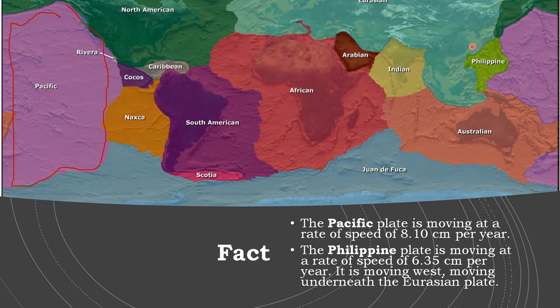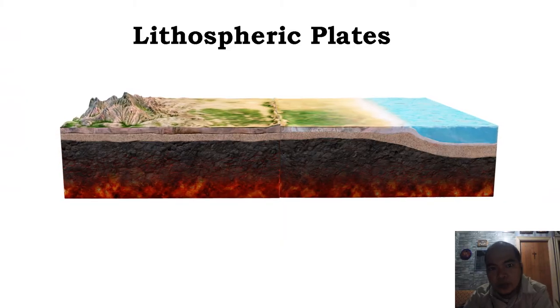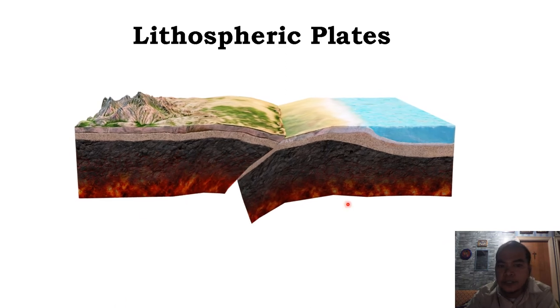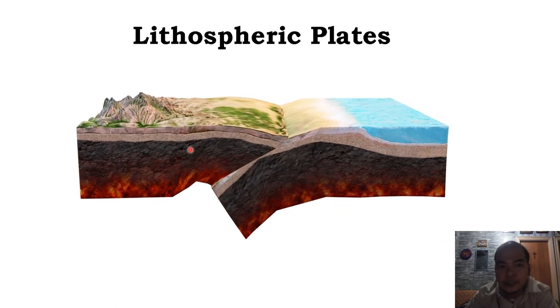The Philippine plate is moving west towards the Eurasian plate — specifically, it is moving underneath the Eurasian plate.